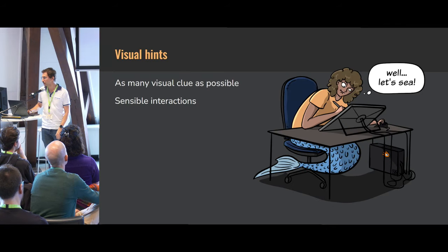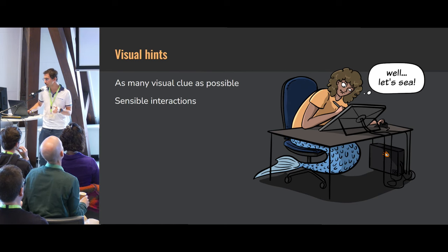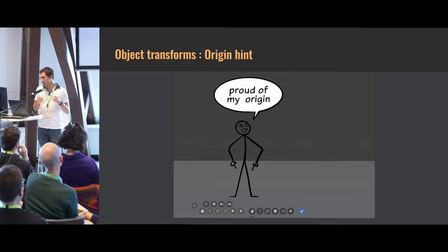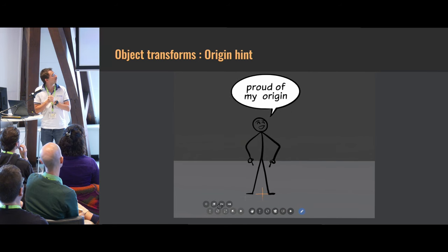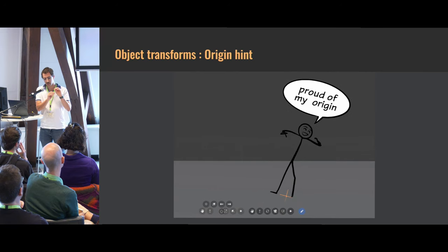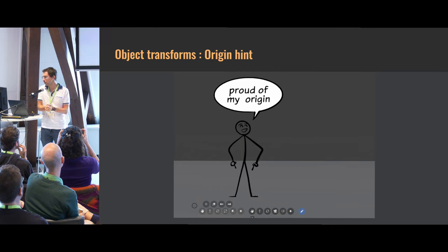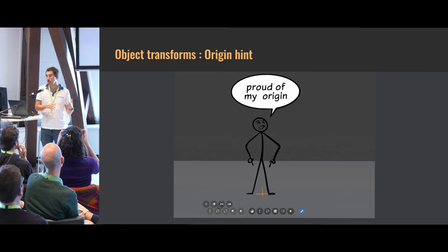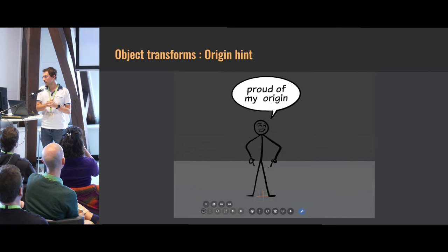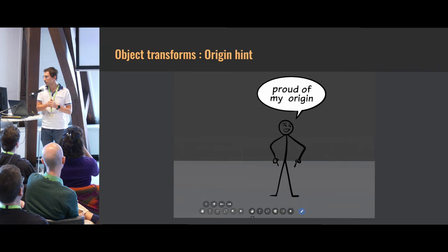2D artists need as many visual clues as possible, so I try to have a lot of visual interaction. For example, the origin point is materialized as a cross — in draw mode you normally don't have origin points displayed, but here you can see the orientation of the object and know your pivot point before you start to rotate. It's always nice to know your origin.